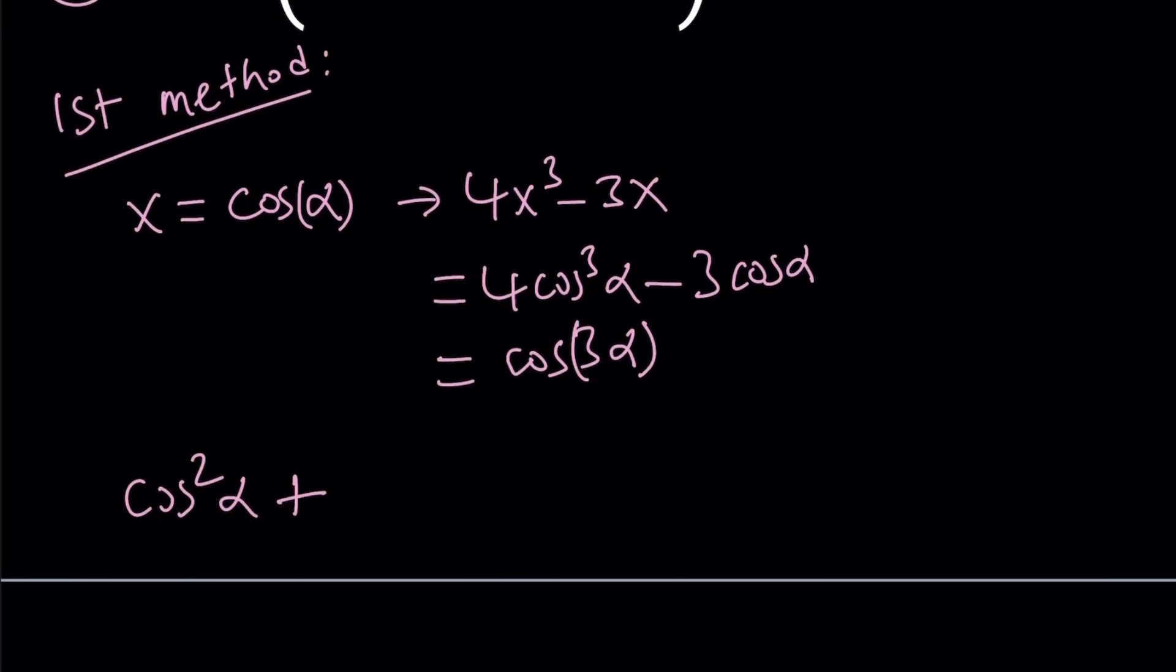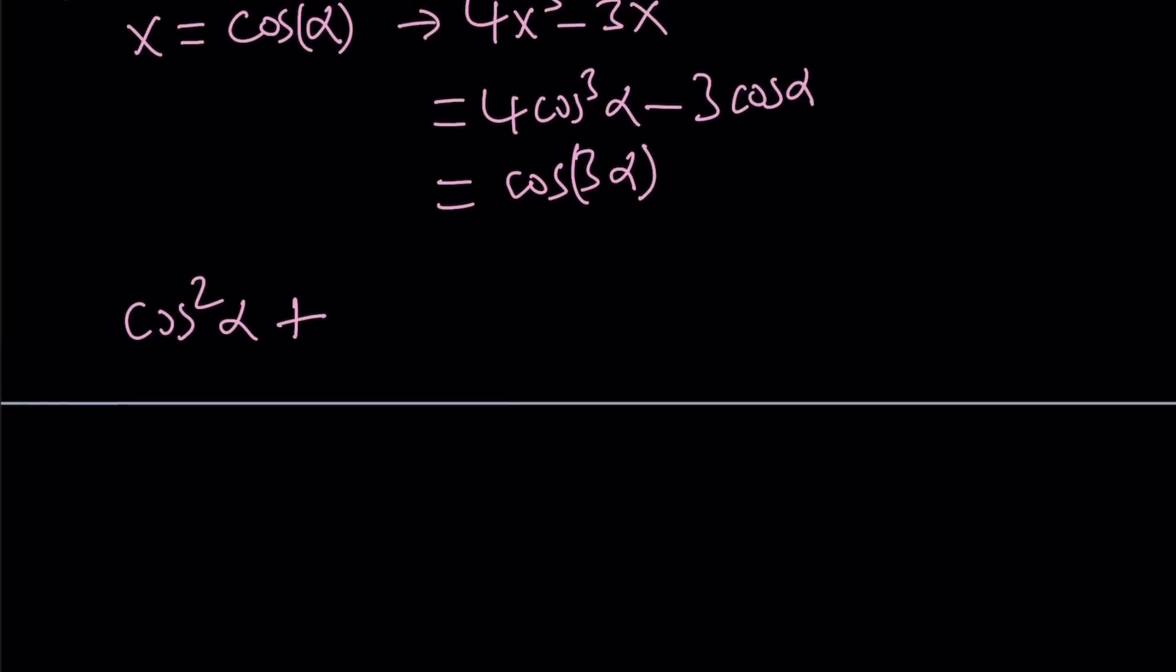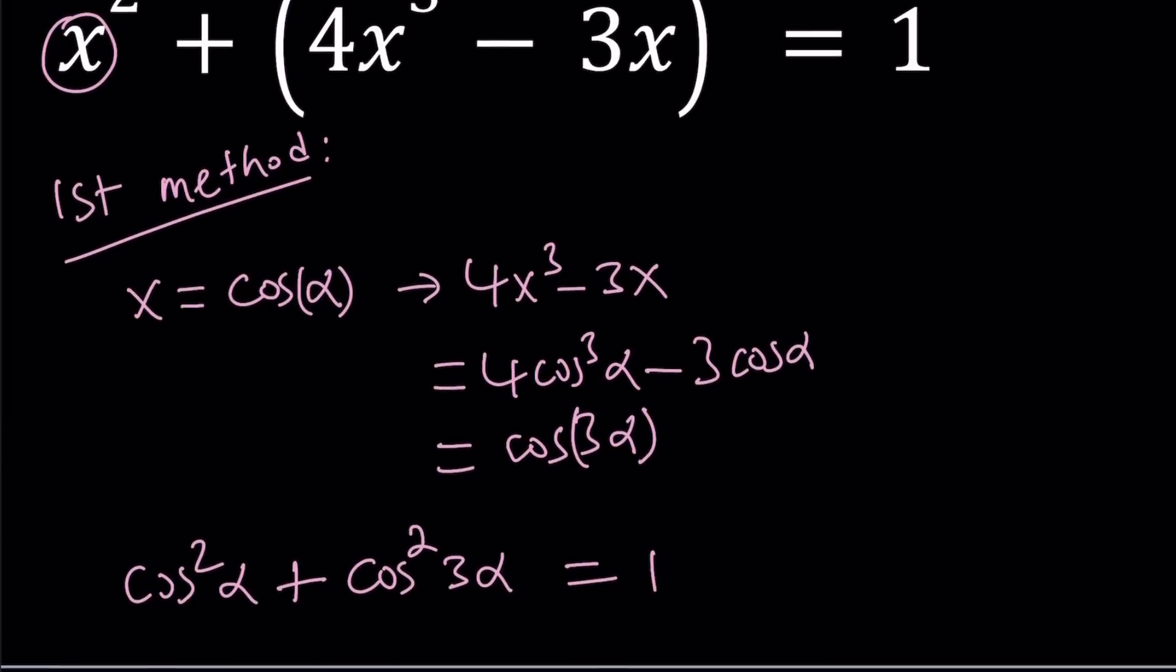we have plus cosine 3 alpha squared. So we can also write this as cosine squared 3 alpha. And their sum is equal to 1. Great.